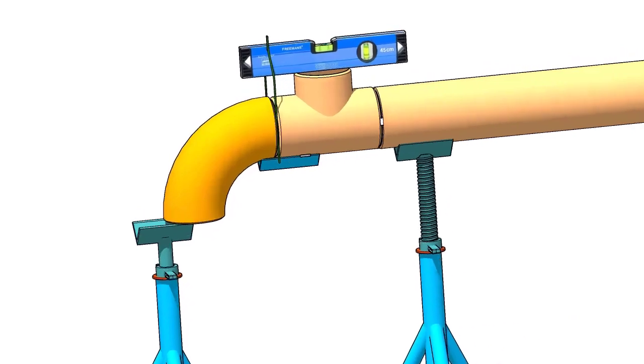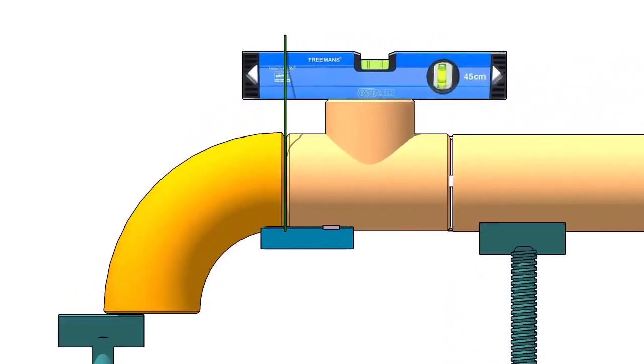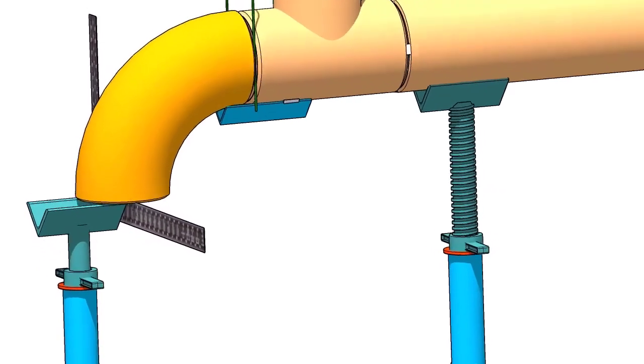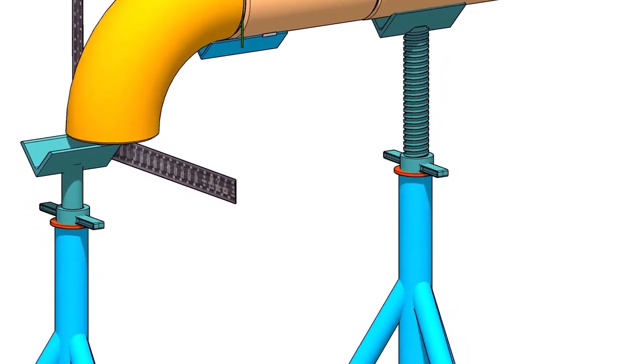Hold a large right angle or a straight edge below the elbow face firmly. Put a level bottle on the right angle as shown. Rotate the elbow to make the face level.